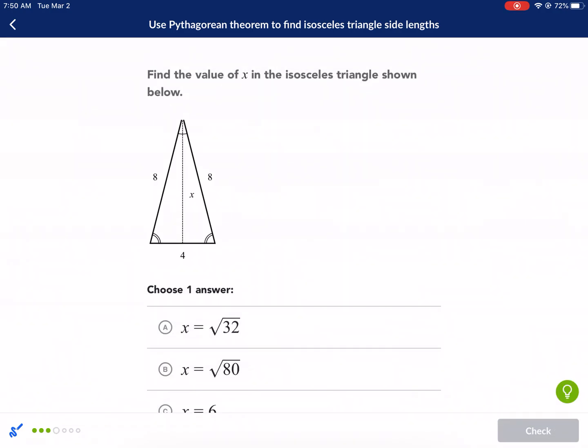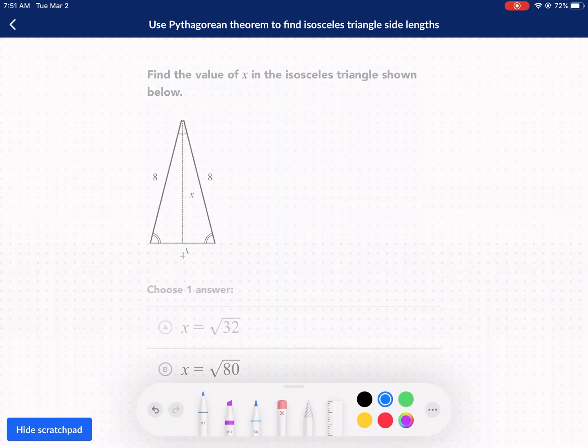Similar problem. We have the same 4 as the whole length. So we have 2 squared plus x squared equals 8 squared. 4 plus x squared equals 64. Subtract 4, subtract 4. x squared equals 60. x equals the square root of 60. And there's our final answer.